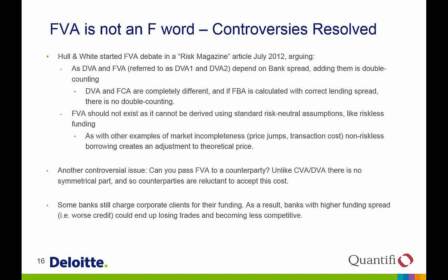Another point Hull and White made is that FBA should not exist because it cannot be derived using standard risk-neutral assumptions like riskless funding. However, like other examples of market incompleteness, non-riskless borrowing creates an adjustment to theoretical price, which is perfectly normal in quantitative finance. Another controversial issue with FBA is whether it can be passed to the counterparty — unlike CVA and DVA, there is no symmetrical counterpart to FBA, so both counterparties incur this cost and are reluctant to accept it. Some banks still charge corporate clients for their funding, meaning banks with higher funding spreads risk losing trades.